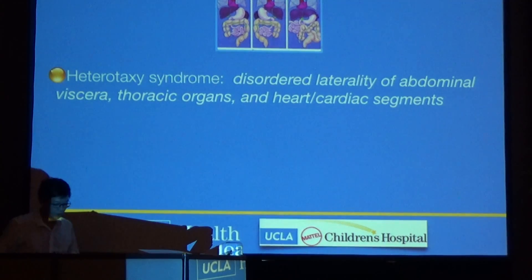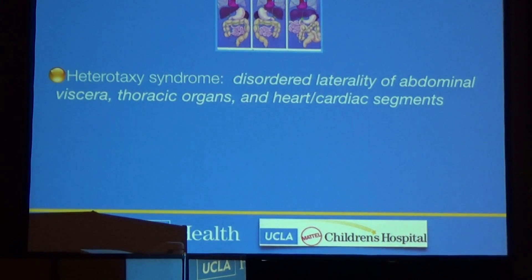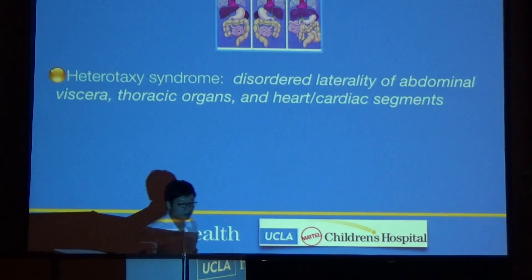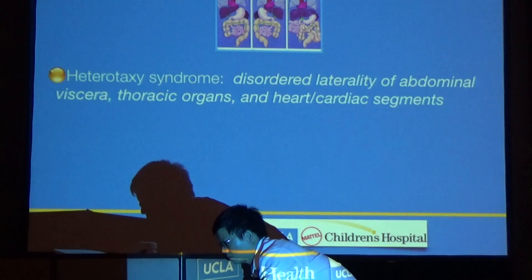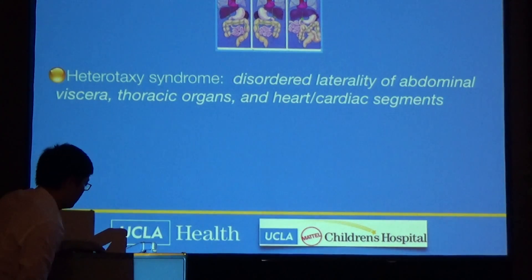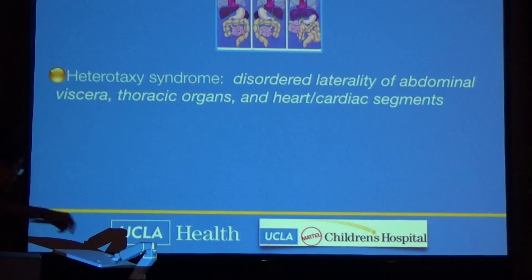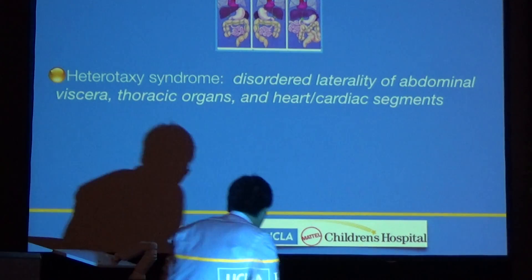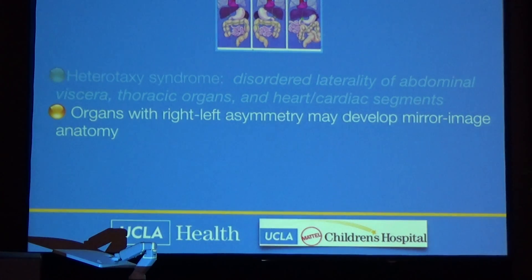So technically speaking, heterotaxy, when we're talking in terms of the fetal heart and complex congenital heart disease, it's a disordered laterality of the abdominal viscera and the thoracic organs and the heart and the cardiac segments. There are multiple abnormalities of the structures and how they're arranged with each other — not just of the heart, but of other structures above and below the diaphragm.